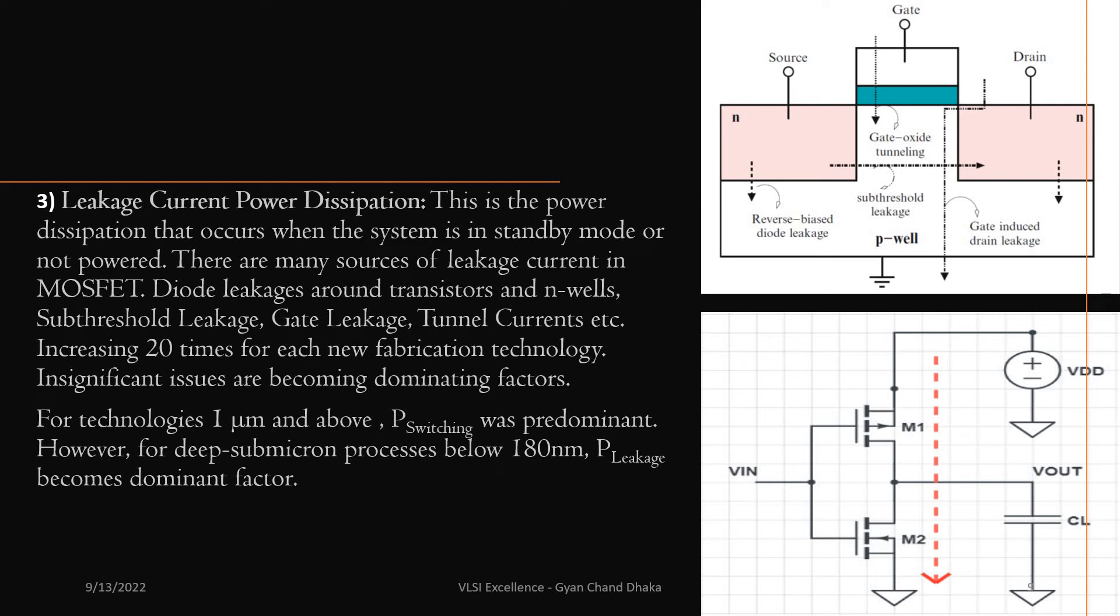We have the leakage current power dissipation, which happens when the circuit is not in function mode, when there is no activity happening in the circuit. It is in standby mode, and due to the leakage current, there is some power dissipation.